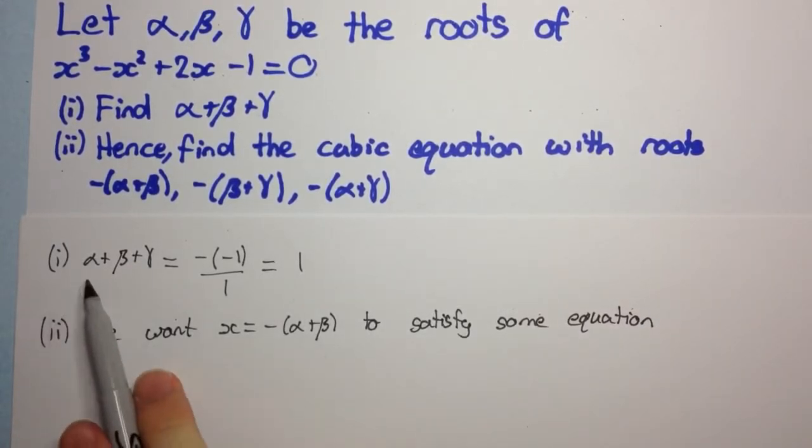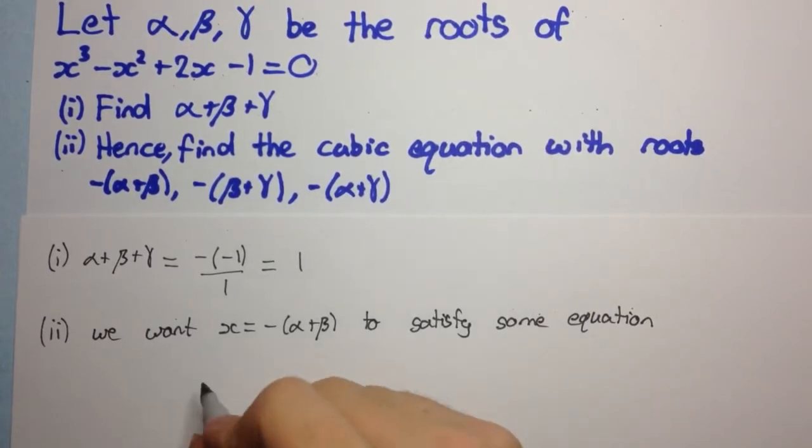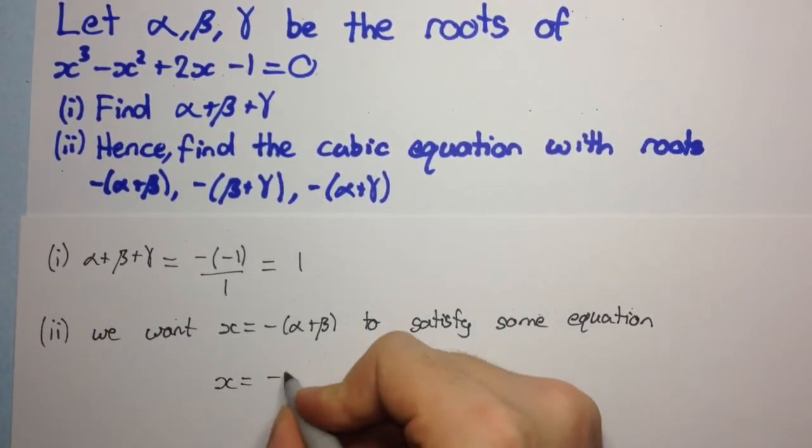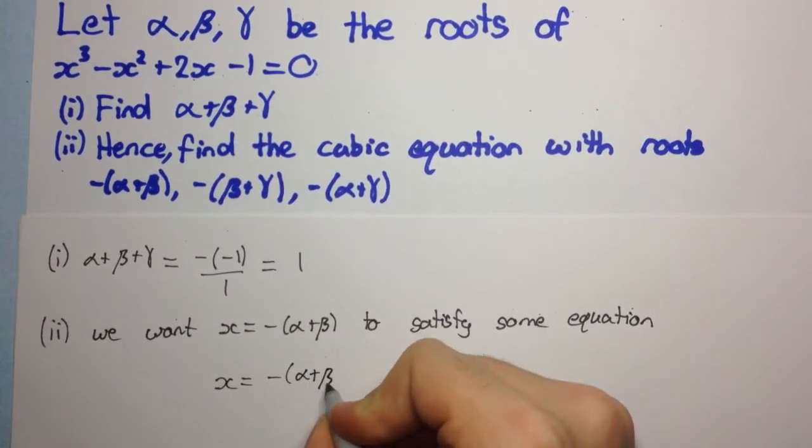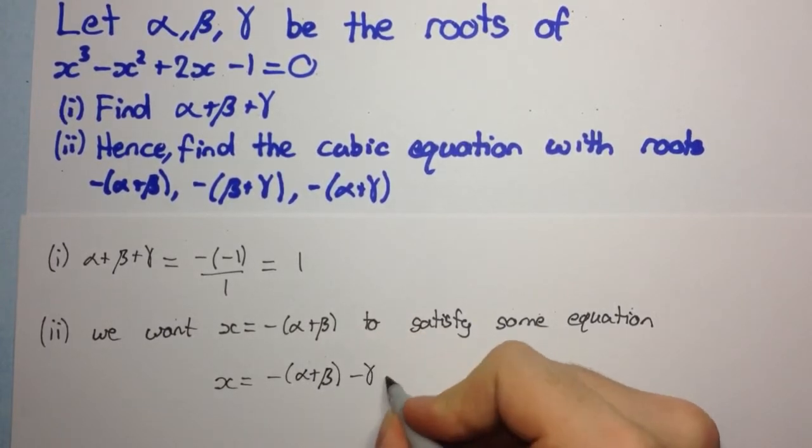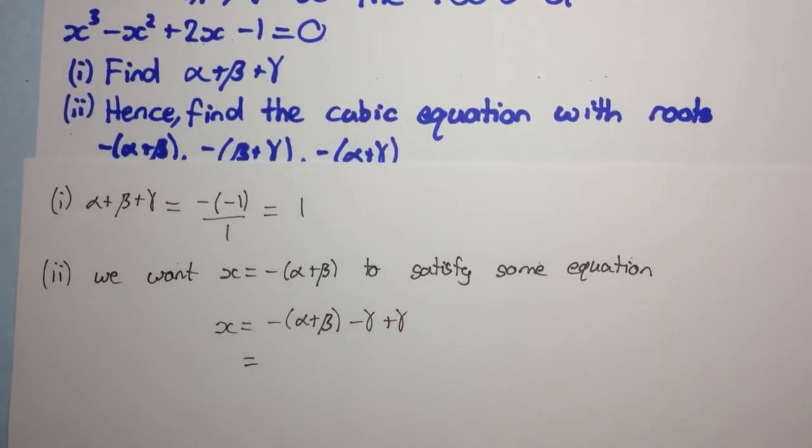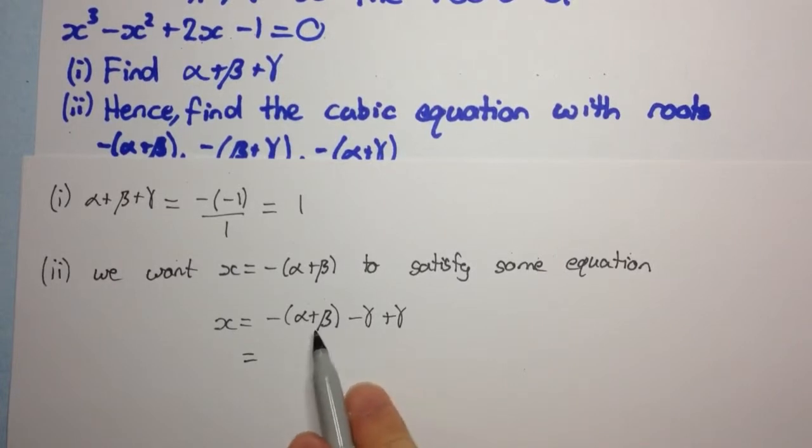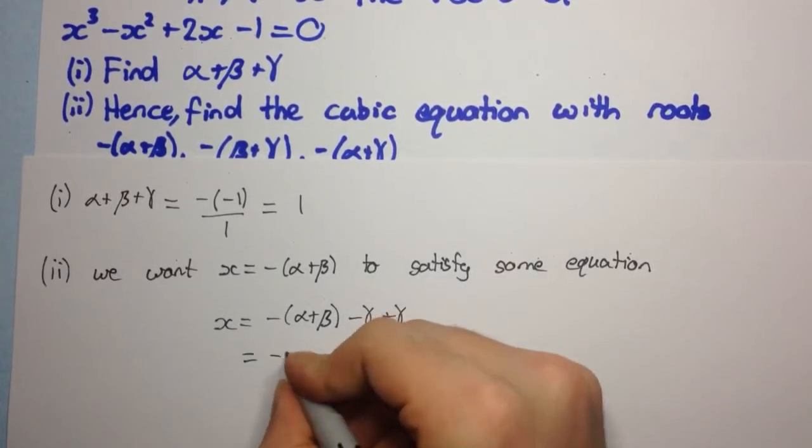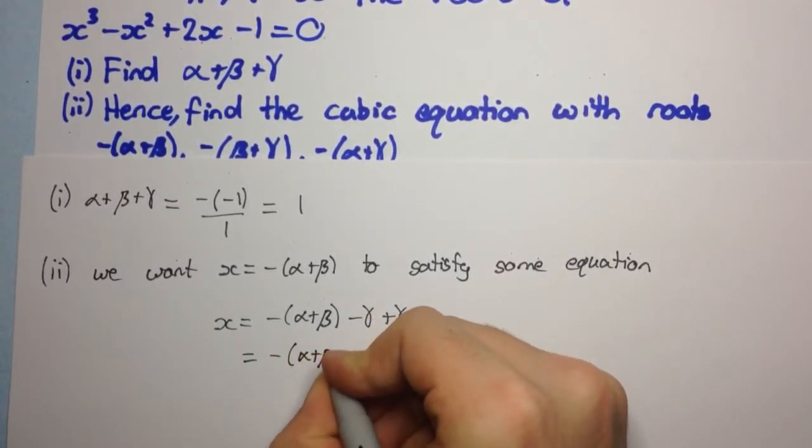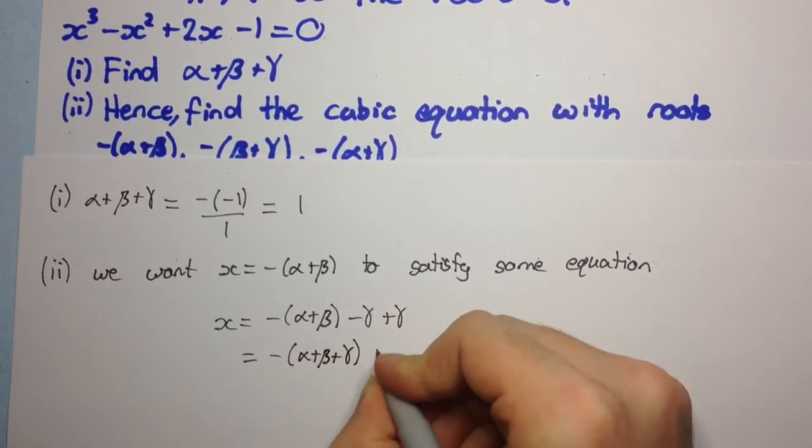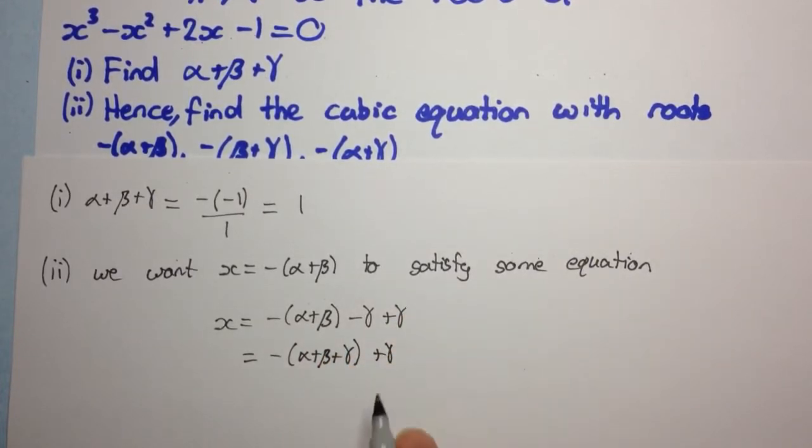Okay, so, how can we involve alpha plus beta plus gamma into this expression here? So, if you think of doing this, subtracting gamma, but then adding it back again, so that means we haven't changed anything. But the reason we do this is because now we can factor out a minus 1 between these two terms. And we get minus 1 outside of alpha plus beta plus gamma, plus gamma.